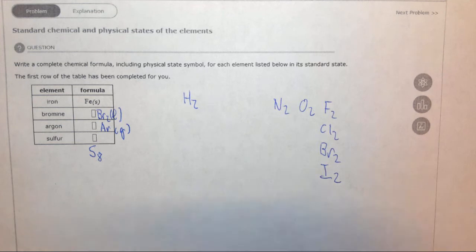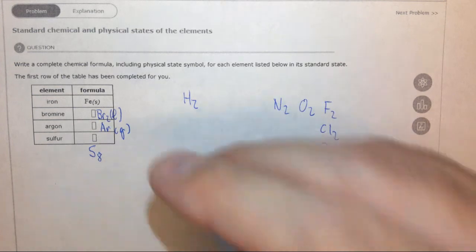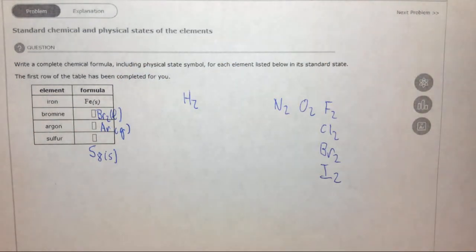Later on in the course you'll learn another way of finding elements in their standard state. But for now, I guess you just have to memorize that sulfur is S8 and it is a solid at room temperature.